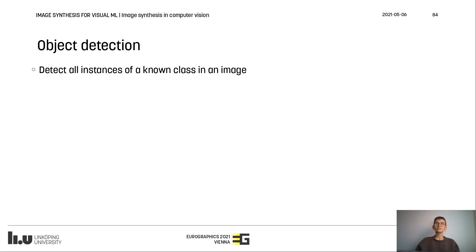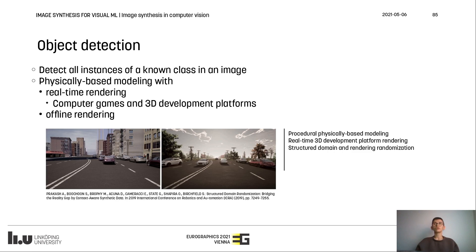Object detection is another recognition task, which aims to find all instances of a specific contextual class in an image. For this task, the majority of image generation methods employed physically-based modeling, coupled with real-time or offline rendering, while domain and rendering randomization was also commonly utilized. A representative example is shown here, utilizing procedural modeling within a 3D development platform.